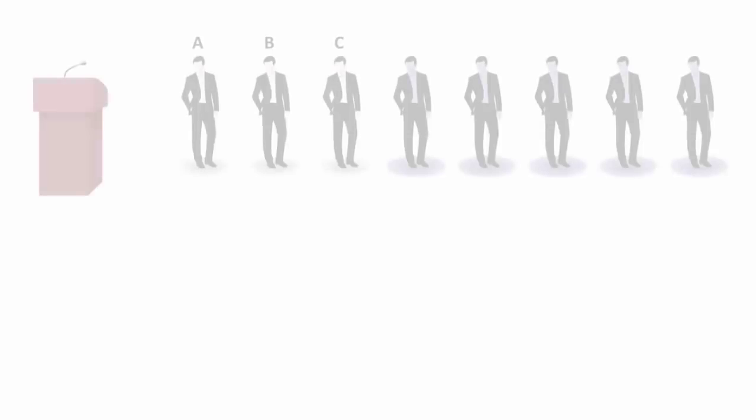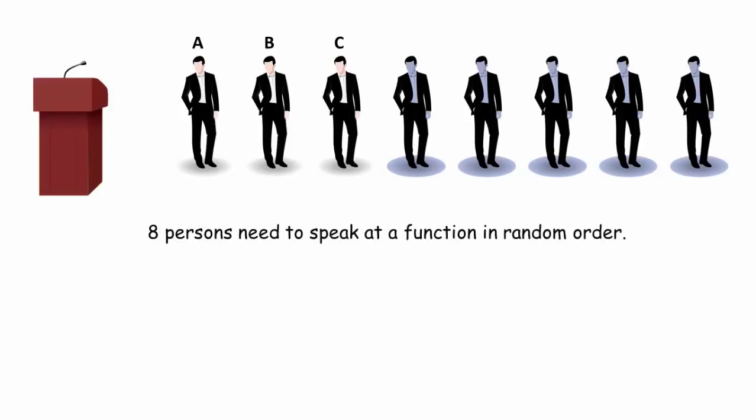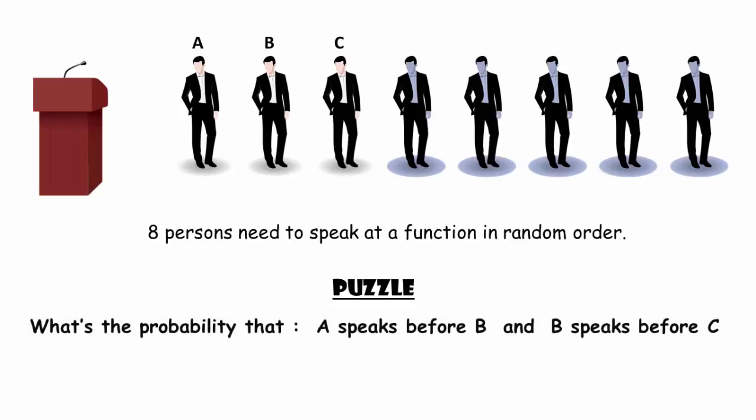What's up logical people? This is Ammar. Eight persons need to speak at a function in random order. What's the probability that A speaks before B and B speaks before C?